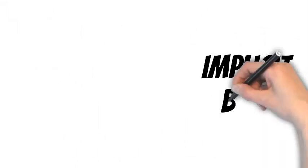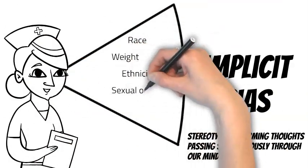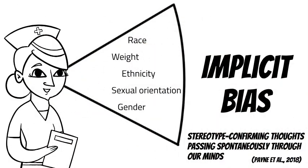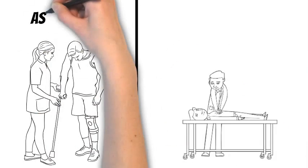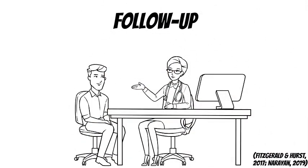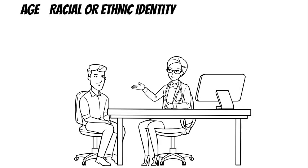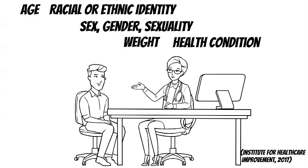Implicit bias: the tendency for stereotype-confirming thoughts to pass spontaneously through our minds. Implicit bias prevents patients from receiving safe, high-quality health care and contributes to health disparities through differences in assessment, treatment, and follow-up care. These implicit biases may be based on age, racial or ethnic identity, sex, gender or sexuality, weight, or health condition, and can lead to stigmatization and discrimination.